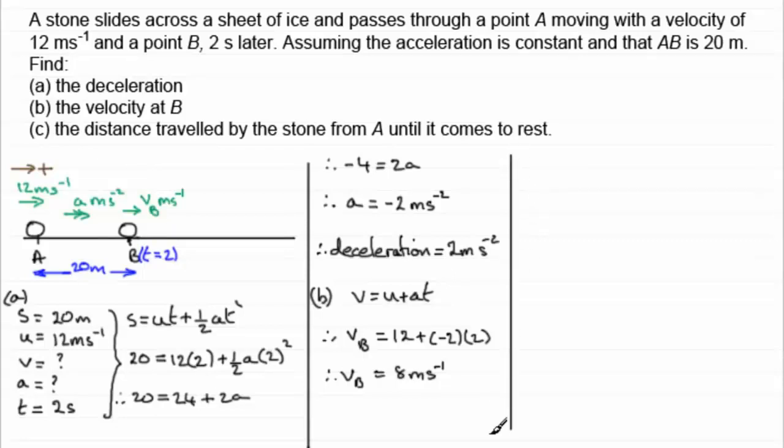And for part C, we'll just come down here. We want to know how far the stone travels then before it comes to rest. Well, let's say it comes to rest way down here at a point, say C. Let's just mark that in there as C. Put the stone in there. And we'll put the velocity on here. It's come to rest, so that's 0 meters per second. The acceleration would also remain exactly the same from A to C. It's constant acceleration. So that will always be minus 2. So in order to get AC, let's just write out our values for SUVAT.